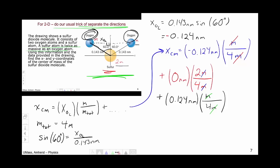Now, the middle quantity is nicely 0 because of this 0 here, which leaves us with an x center of mass of minus 0.124 nanometers over 4.